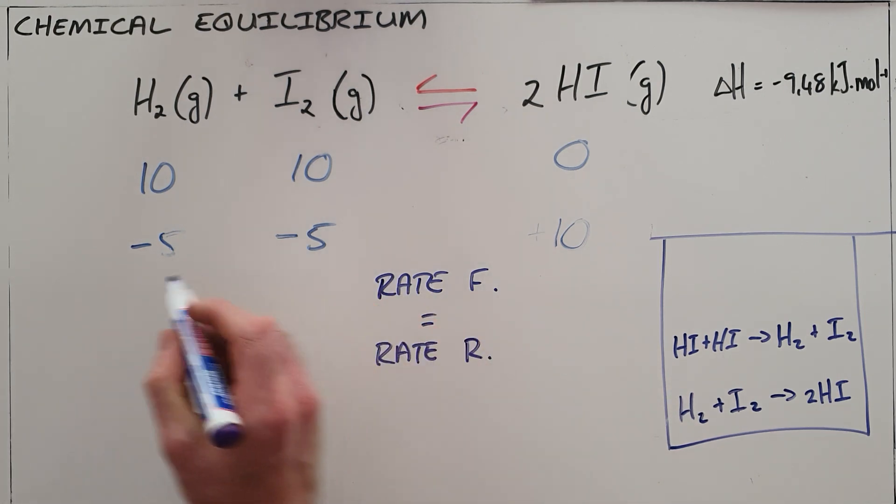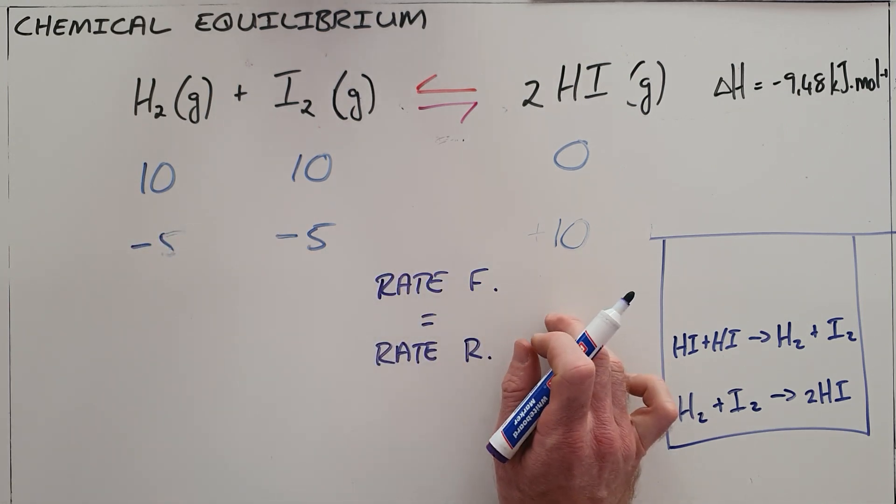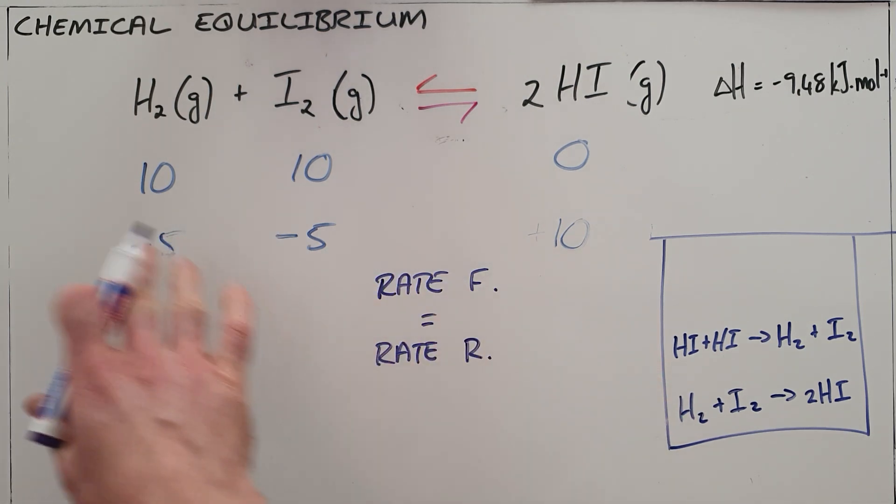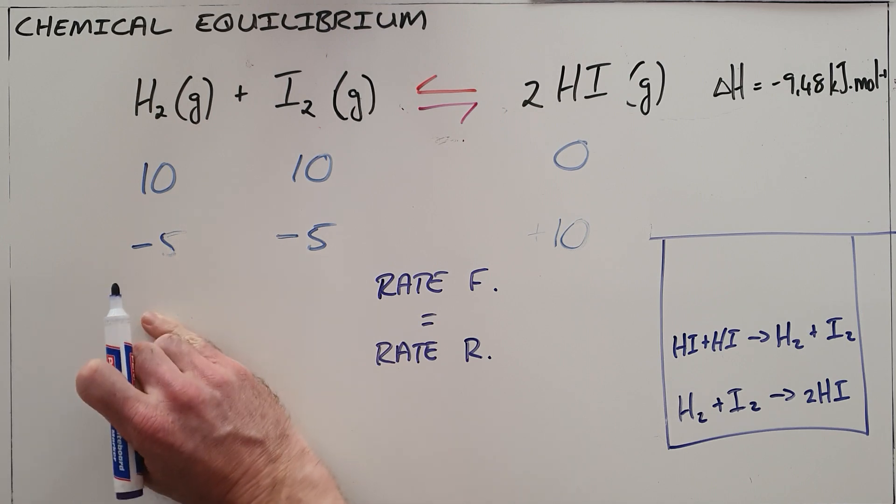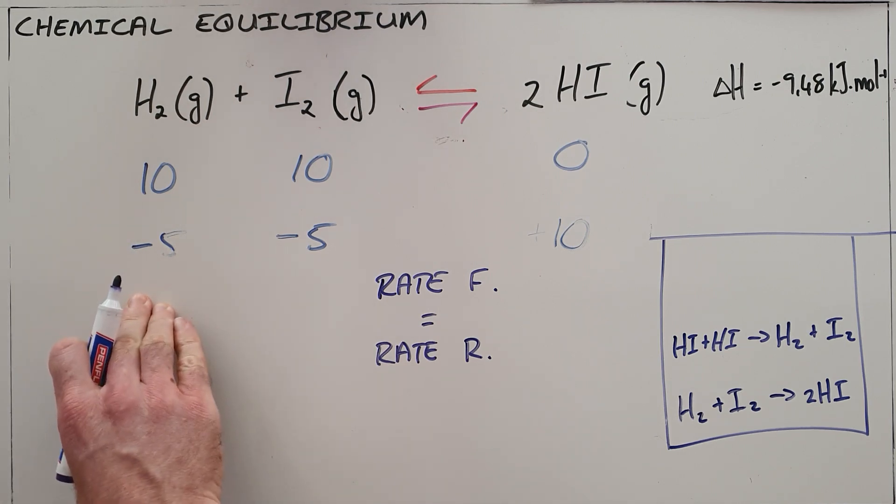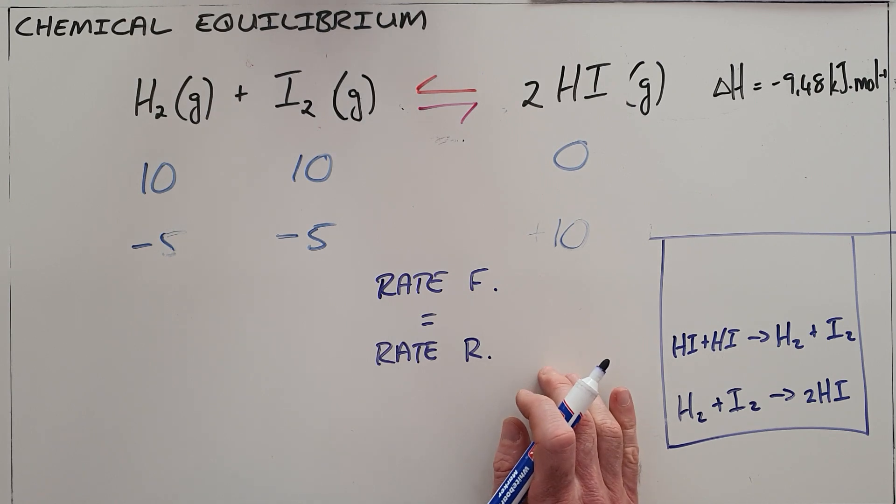We say this because at that point, it looks like the amount of each substance present remains constant. Every time one hydrogen is used up on this side, another one is produced as a result of this, so the net change to the amount of hydrogen or the amount of hydrogen iodide remains zero.